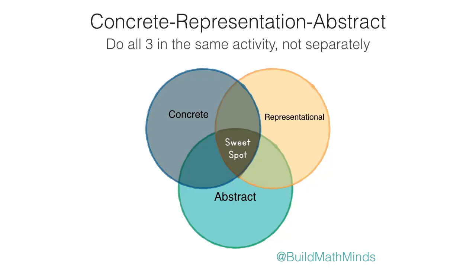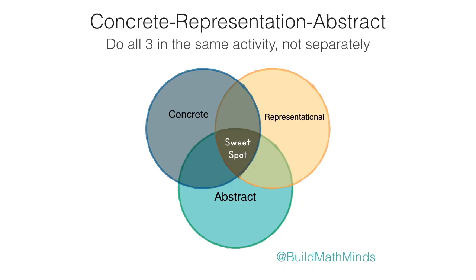Instead, I want to encourage you to view it more as a Venn diagram — these overlapping circles. If we can hit an activity in what I call the sweet spot, where you help kids see that what they're doing concretely with manipulatives connects to the drawing they're doing, and that connects to the written symbols — when you help kids make all three of those connections within the same lesson — those are the lessons where at the end we think, 'that was so awesome!' Sometimes it's because kids could see all of those connections, things were flowing, they started having those light bulb moments. When you're in that sweet spot, it just makes a world of difference for kids.